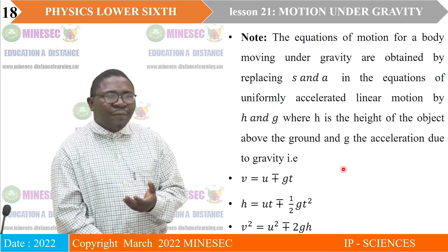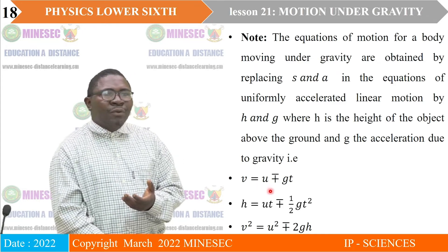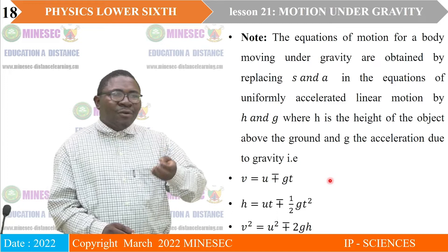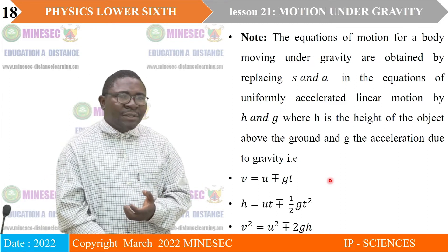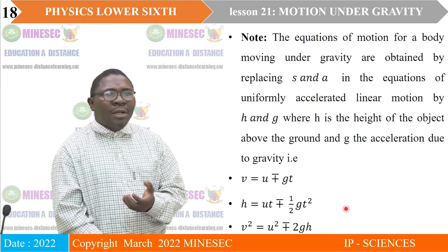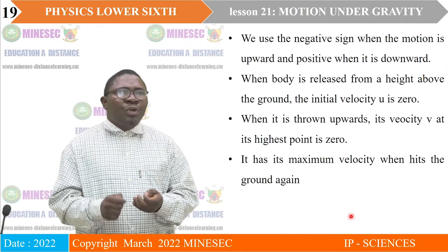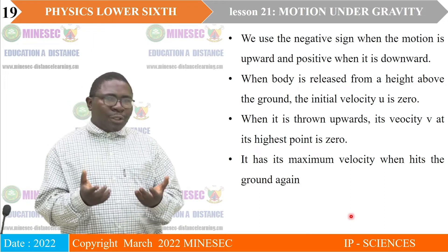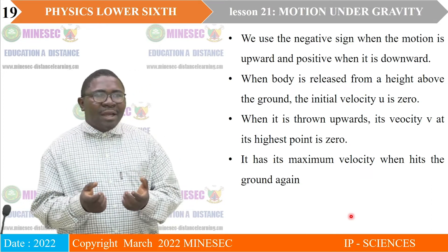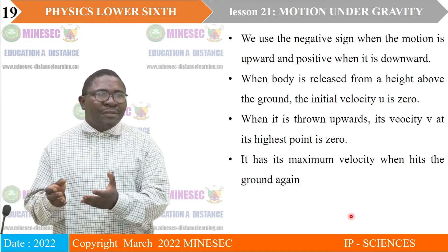If we replace those variables, the first equation of motion becomes V equals U plus or minus GT. The second gives height H equals UT plus or minus half GT squared. And finally, V squared equals U squared plus or minus 2GH. We use the negative sign when the motion is upward, and positive when it is downward.